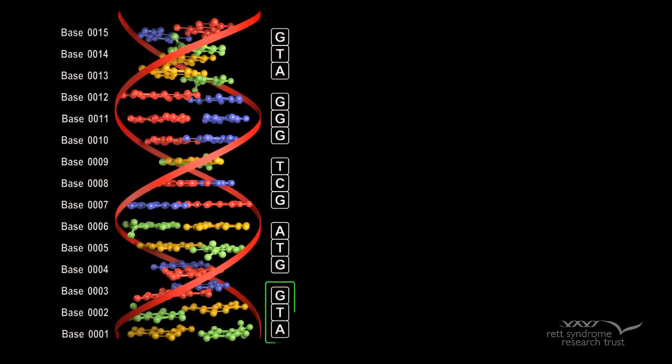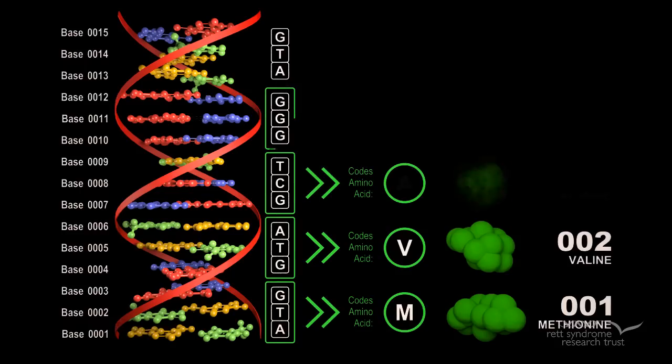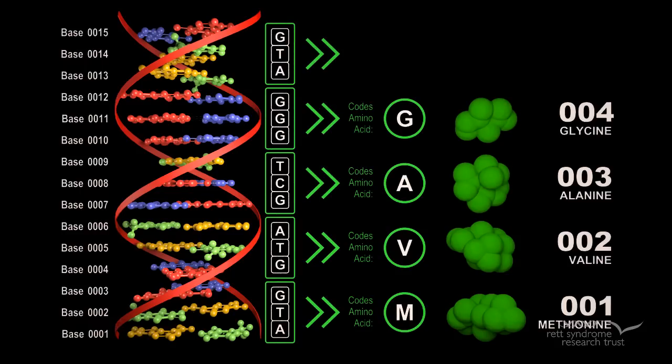A single strand of DNA is made up of many bases, and every three bases encode an amino acid, which form an amino acid chain.